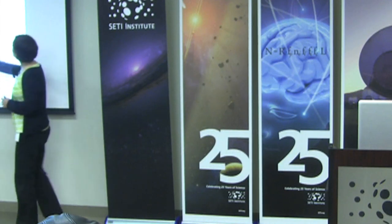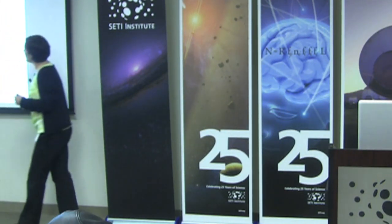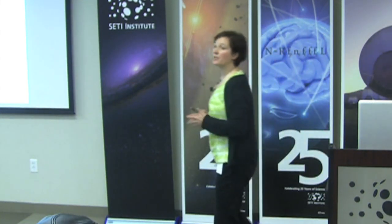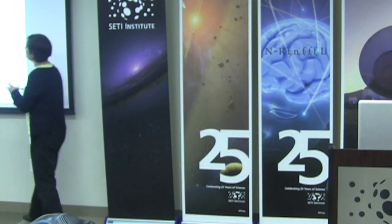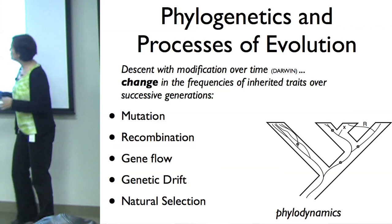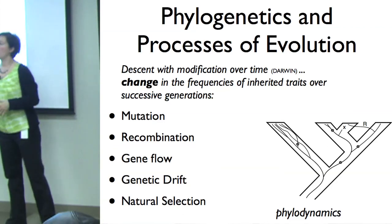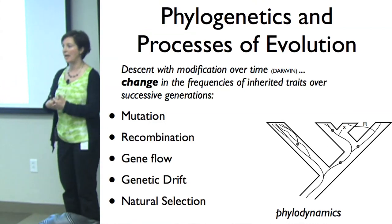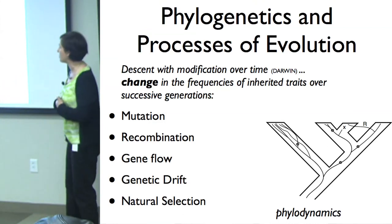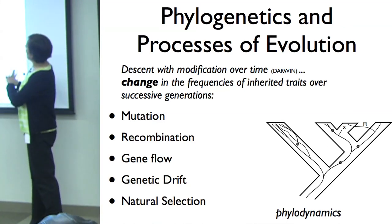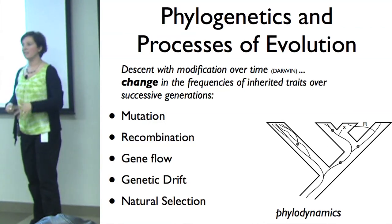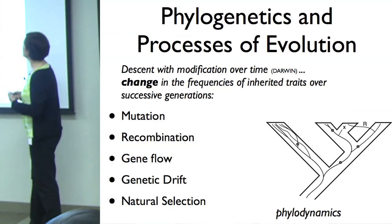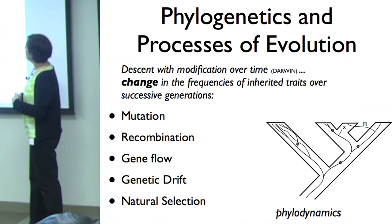We need to understand where diversity is stored in populations of viruses, and what happens to that diversity over time in response to different environmental conditions. It's really all about identifying the forces of evolution acting on pathogens. The source of all variation is mutations, and mutations in viruses occur at a very rapid rate because of the way they copy themselves, which is highly error-prone, unlike the way we copy our genome. Evolution simply refers to change — biological change over time — descent with modification, as Darwin put it.